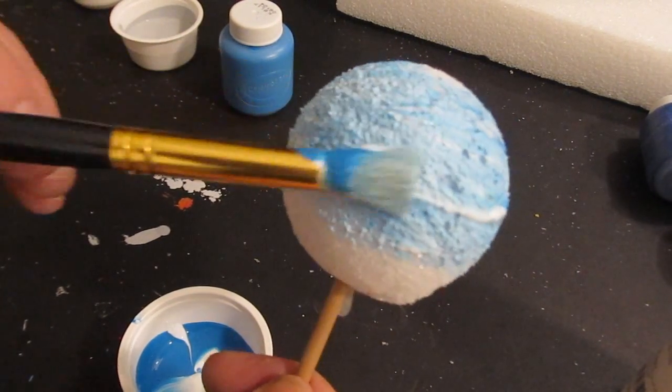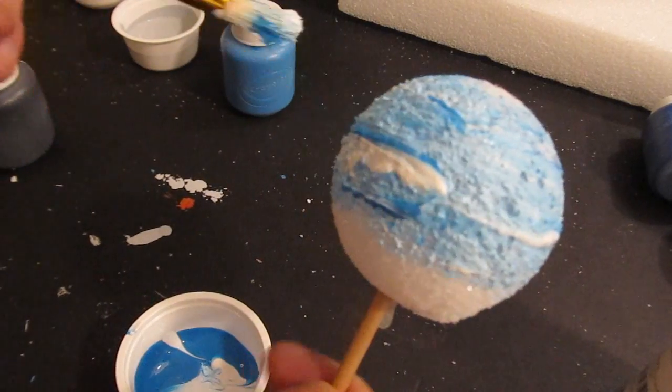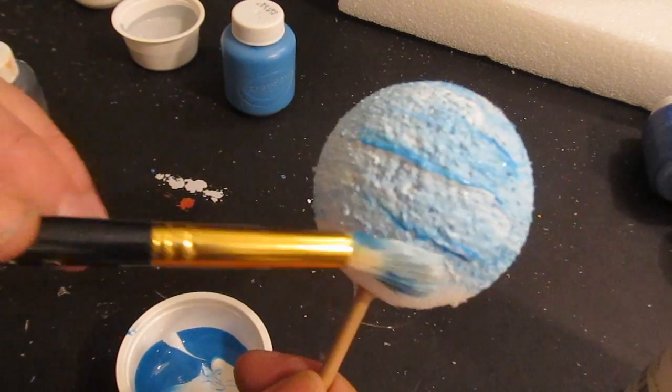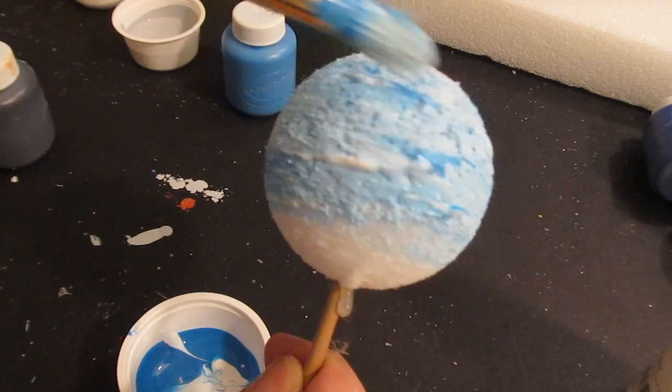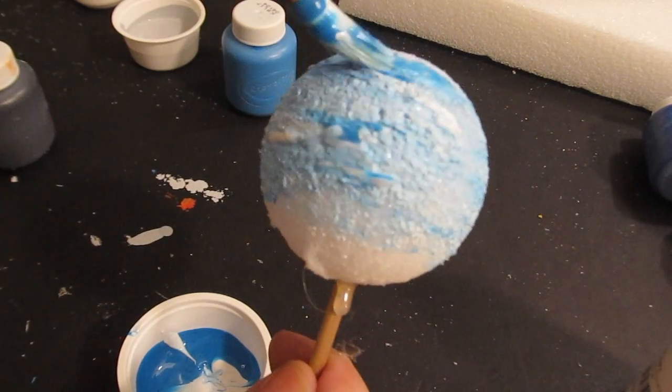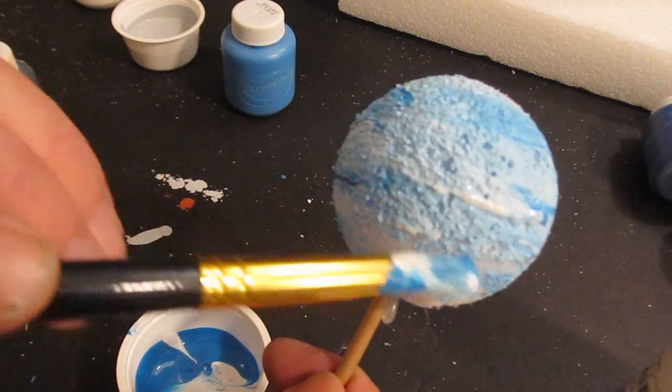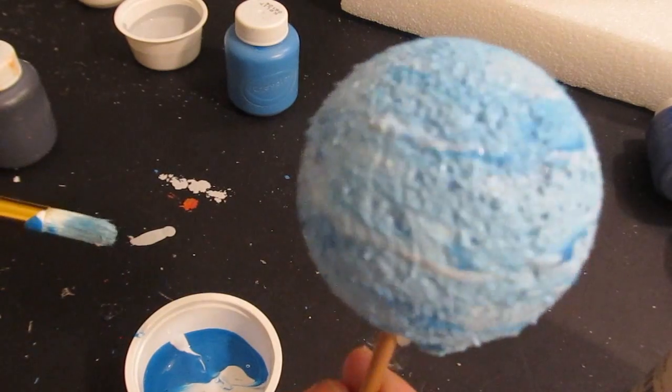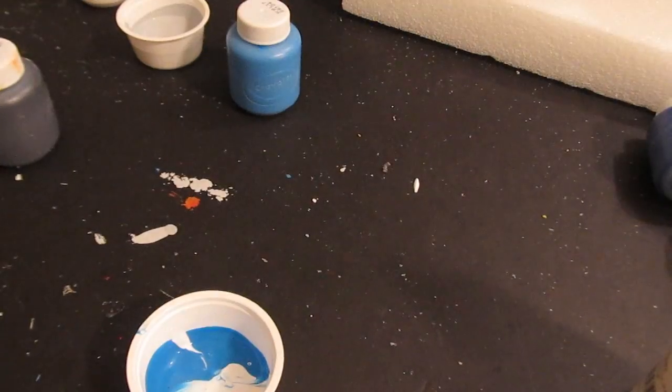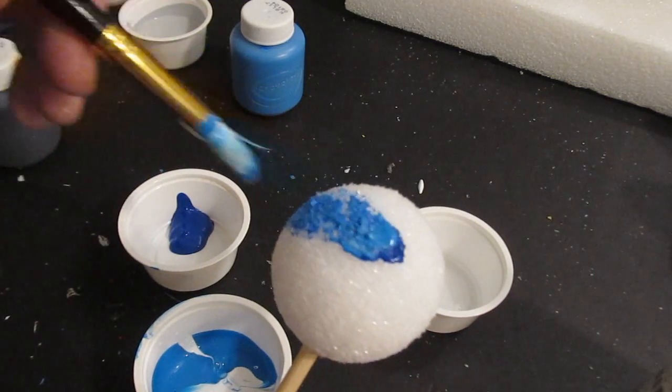What's next? Uranus, right here. It's blue and white. Light blue and white, like this. And we want it to be a light blue. And you'll see why when we do Neptune. We want Neptune to be a darker blue. That's nice. See the brush strokes?